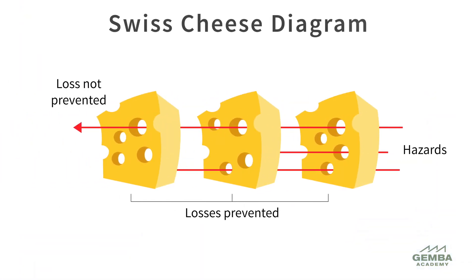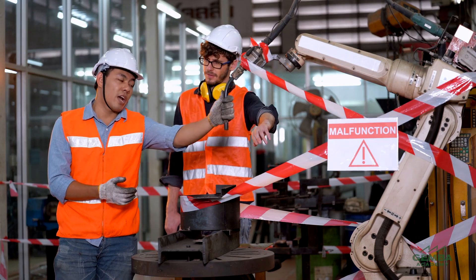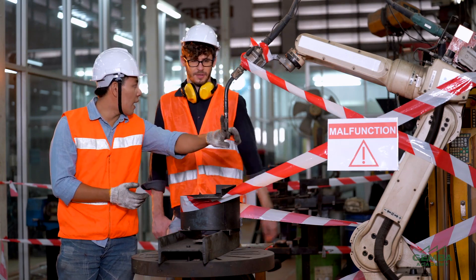Another method to model the barriers in place to prevent a hazardous event is the Swiss cheese diagram. The Swiss cheese diagram is similar to a fault tree analysis in the left side of a bowtie analysis. However, unlike bowtie analysis, a Swiss cheese diagram does not illustrate the ways in which the harm and consequences can be minimized once the event has occurred.